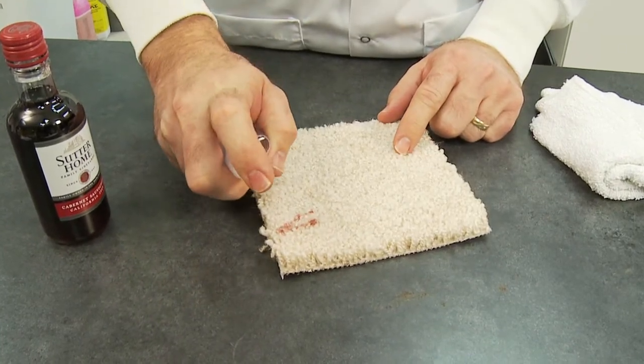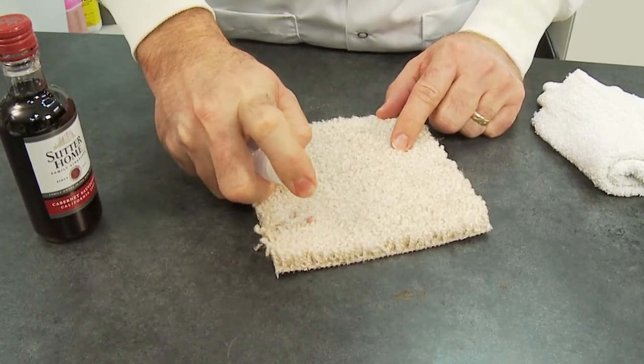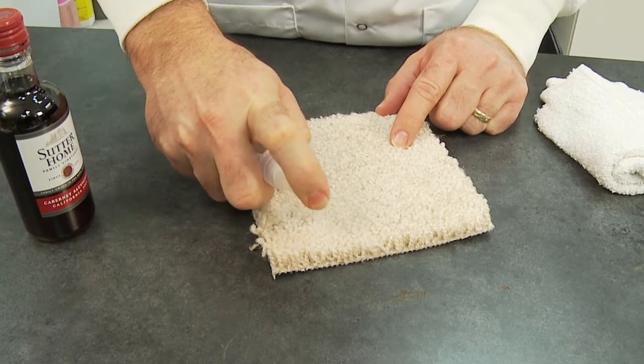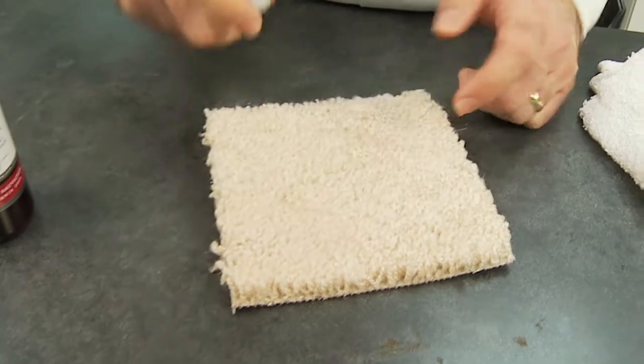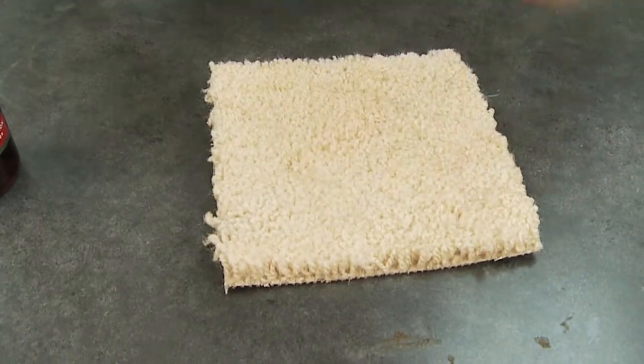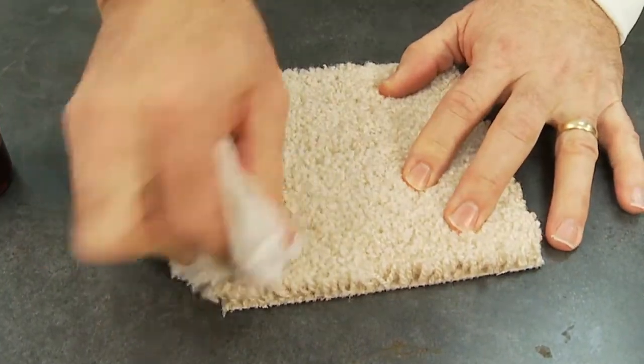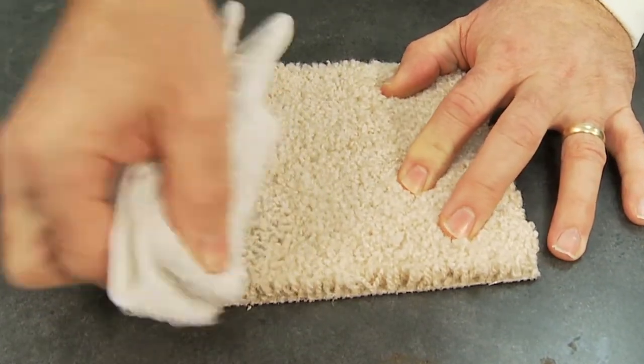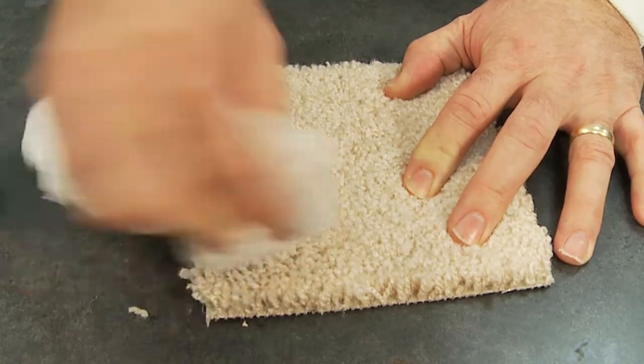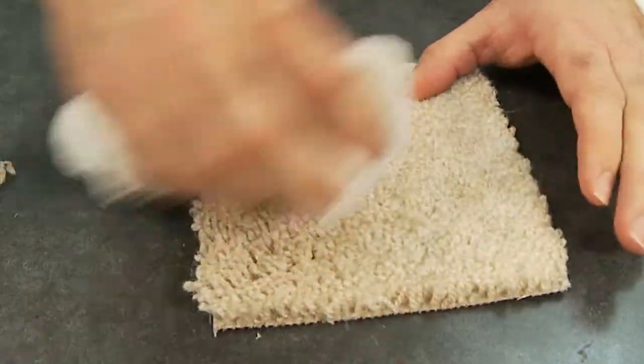All you do is spray the Gugon wine-out and you can see the color literally disappear. Now you want to dab a little bit to help get the residual wine-out. We have chemistry in there that helps you to lift that stain right out of the carpet and be gone.